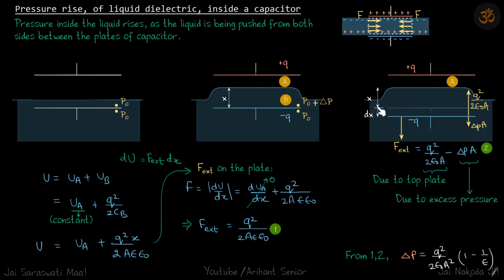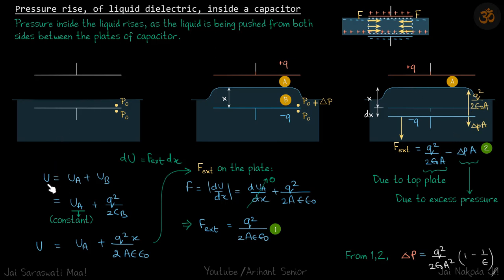Since we move the plate very slowly, the forces are balanced, giving: f_external = q²/(2ε₀A) − delta_p · A, where the first term is due to the electrostatic attraction between the plates and the second term is due to the excess pressure. This gives us one relation between f_external and delta_p. Next, to eliminate f_external, we calculate the change in potential energy due to the displacement dx, and set du/dx equal to f_external.